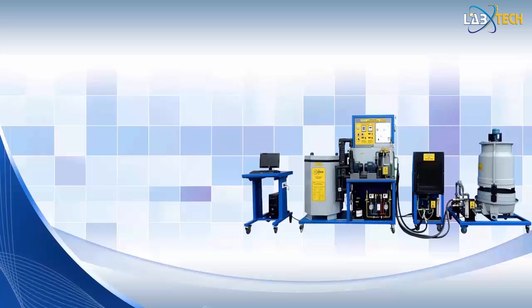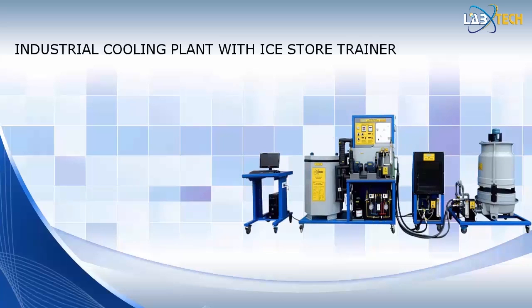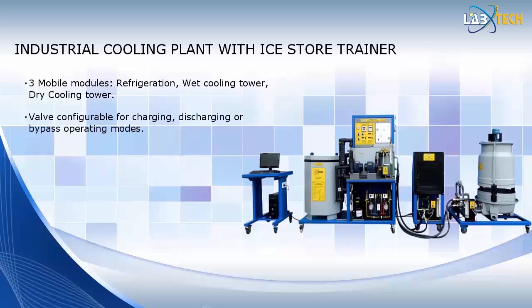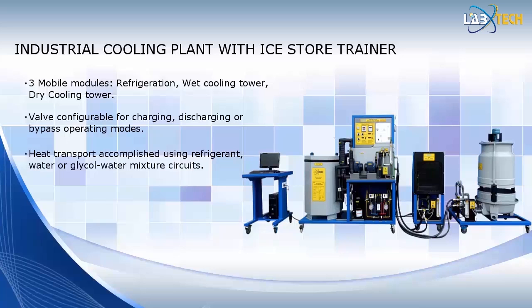This photo shows Labtech's industrial cooling plant with Ice Store Trainer. This trainer is comprised of three mobile modules joined together by hoses. The basic module contains the usual refrigeration components along with the brine circuit and an intermediate tank. The other two modules consist of a wet cooling tower unit and a dry cooling tower unit. The system is equipped with valves that configure various operating modes, and heat transport is accomplished by three different circuits: refrigerant, water, or chemical water mixture.